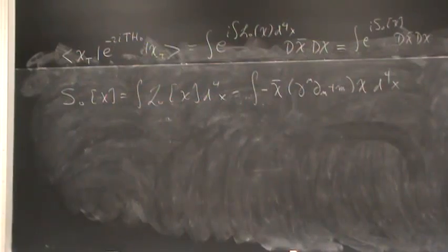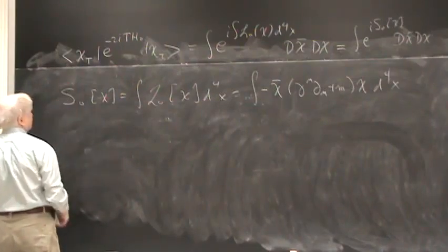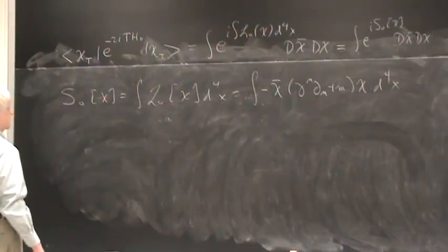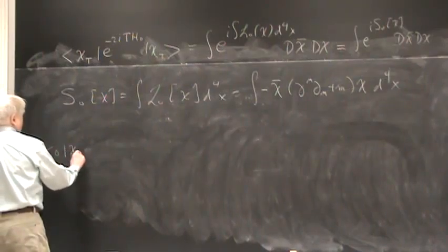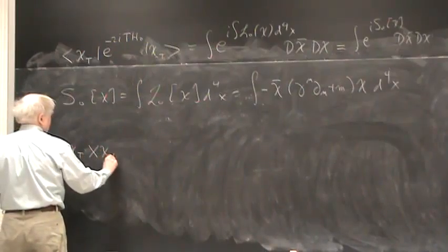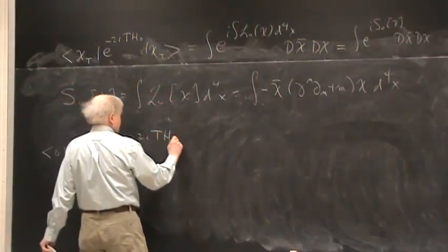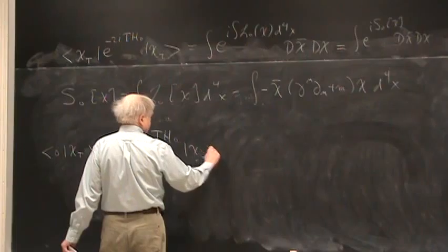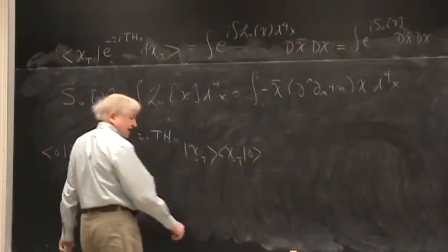Now, what we can do is imitate what we did for Bose fields. In the case of Bose fields, what we did was we said that we can turn this into a vacuum-to-vacuum amplitude if we multiply by vacuum chi-T, and then chi-T e to the minus 2i T h0, chi-minus-T, chi-minus-T vacuum. This is the bare vacuum.